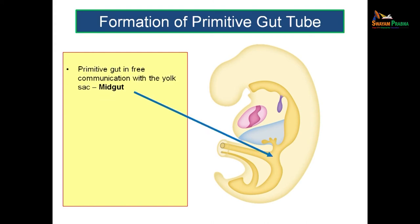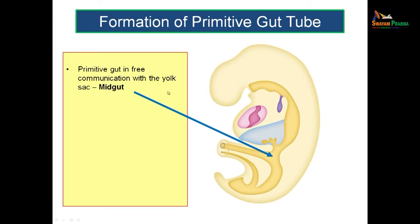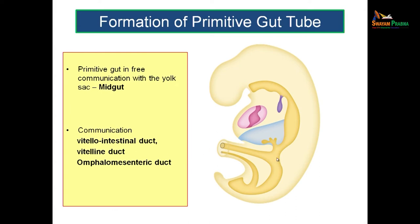The foregut is cranial to the communication of the primitive gut with the yolk sac, and the hindgut is caudal to that communication. The midgut is actually the part of the primitive gut which is communicating with the yolk sac. The communicating link between the primitive gut and the yolk sac is known as the vitello-intestinal duct, also called the vitelline duct or the omphalomesenteric duct. These are the different names given to the communication between the midgut and the yolk sac.